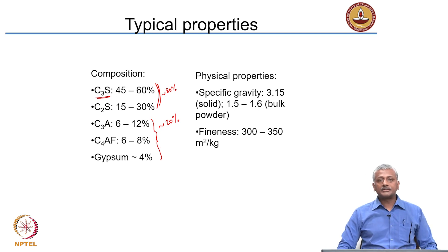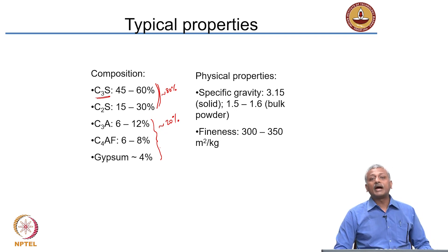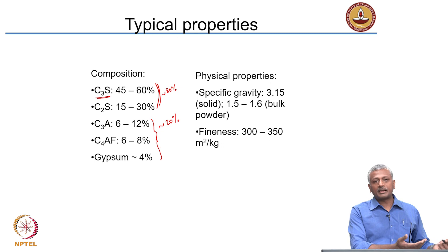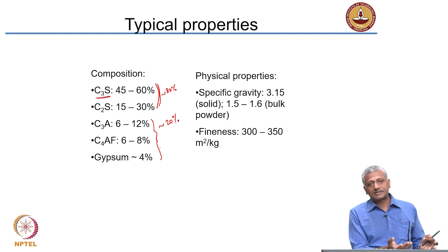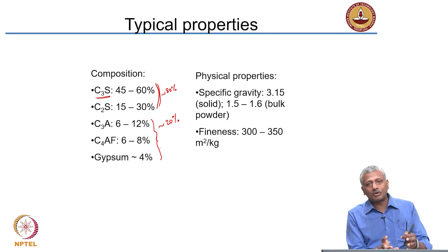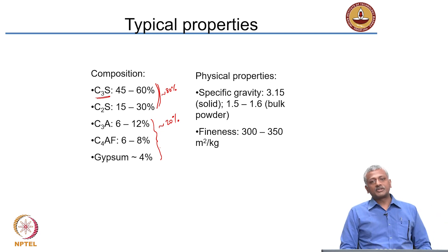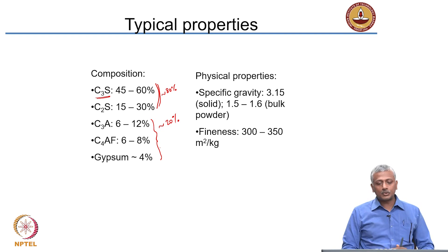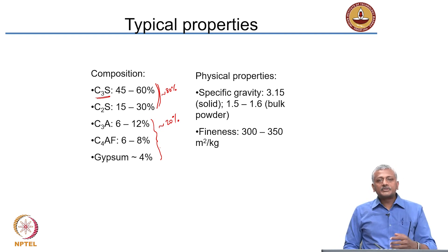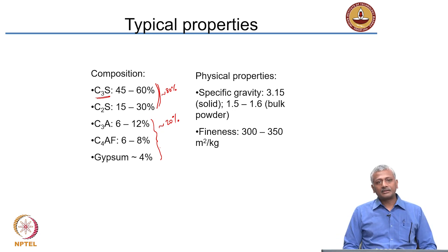We talked in the last chapter about hydraulic lime, which is produced from the burning of impure limestone — that also leads to formation of calcium silicates, but in smaller forms. Here, cement forms larger forms of calcium silicates like C3S and C2S. What do these compounds basically impart to the cement? We will look at the reactions and chemistry in just a few minutes.